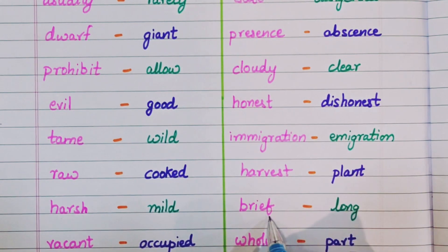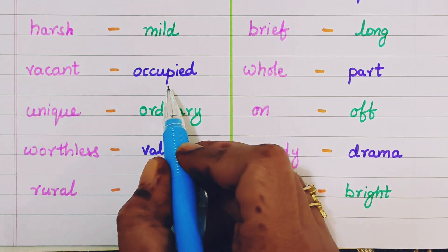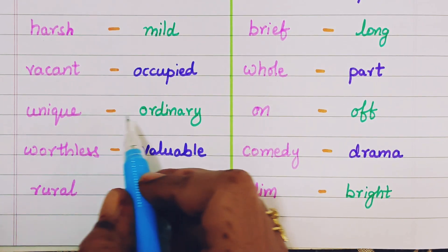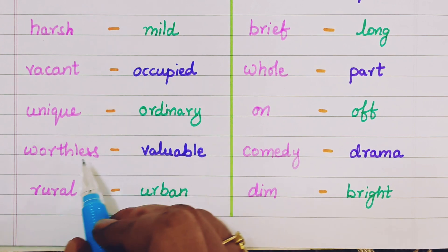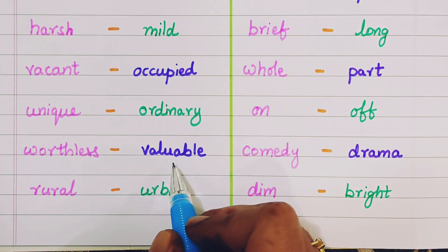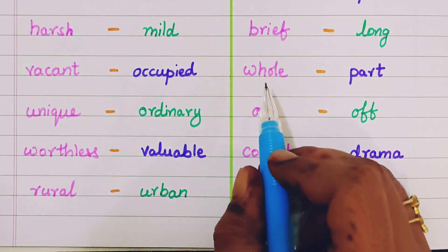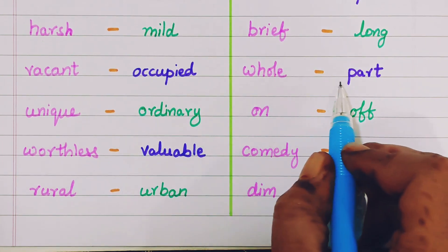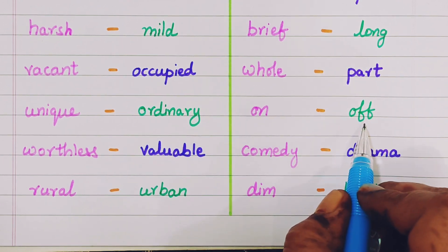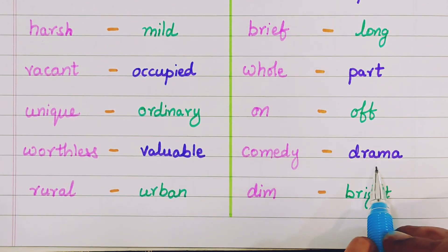Brief, long. Vacant, occupied. Unique, ordinary. Worthless, valuable. Rural, urban. Whole, part. On, off. Comedy, drama.